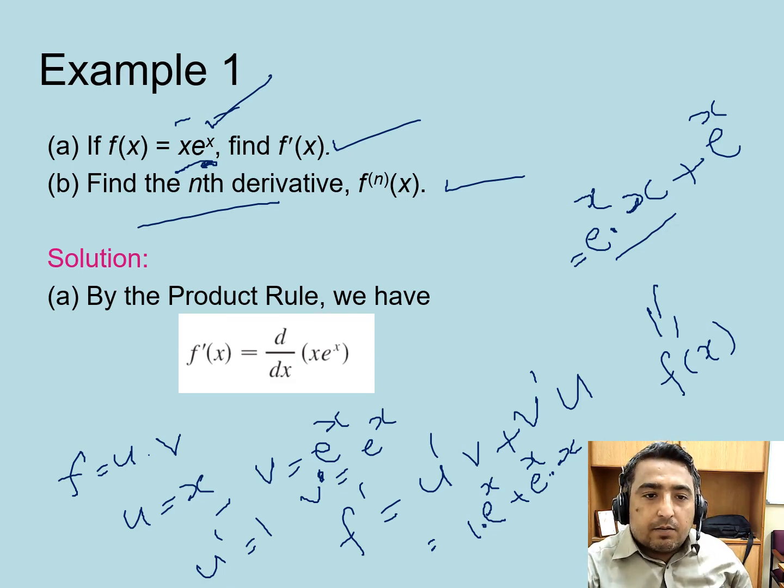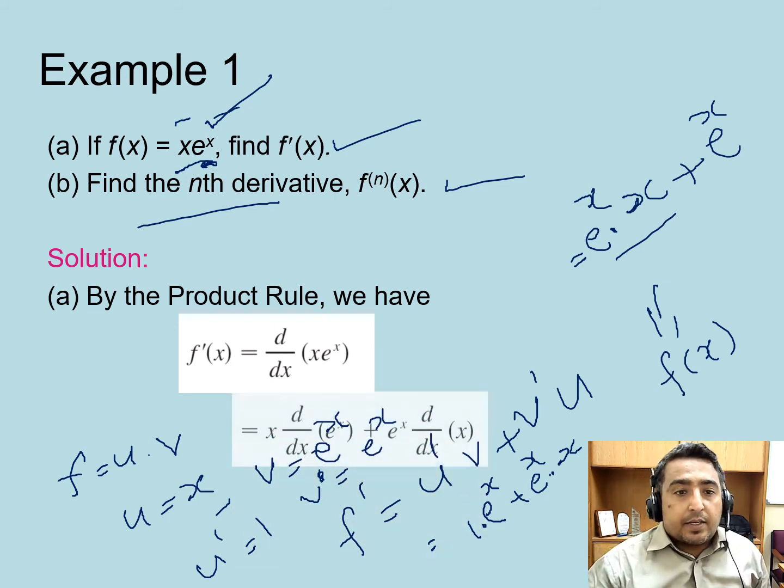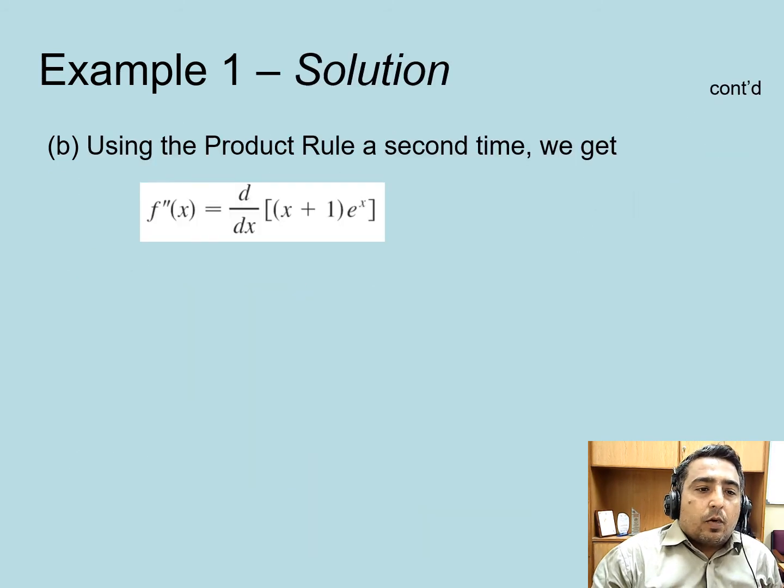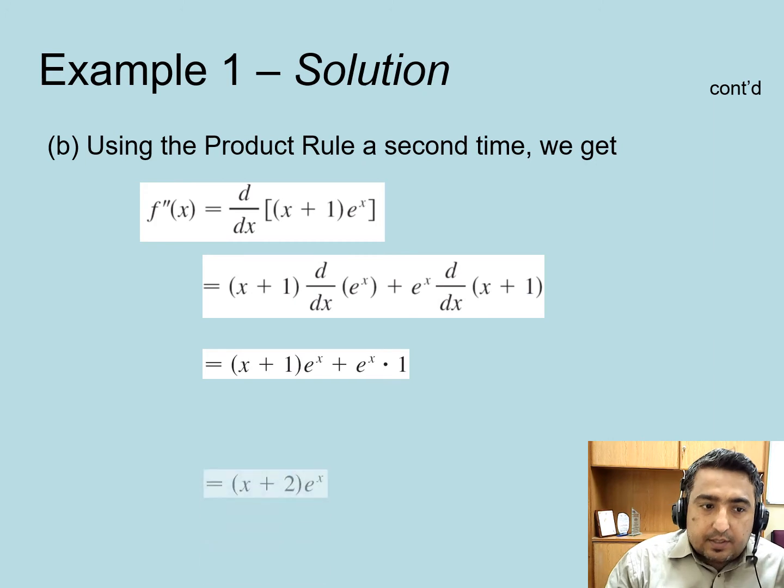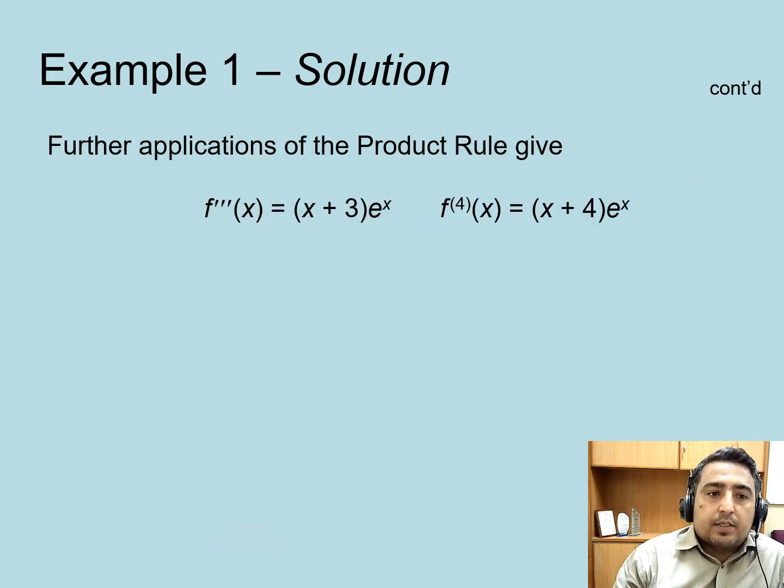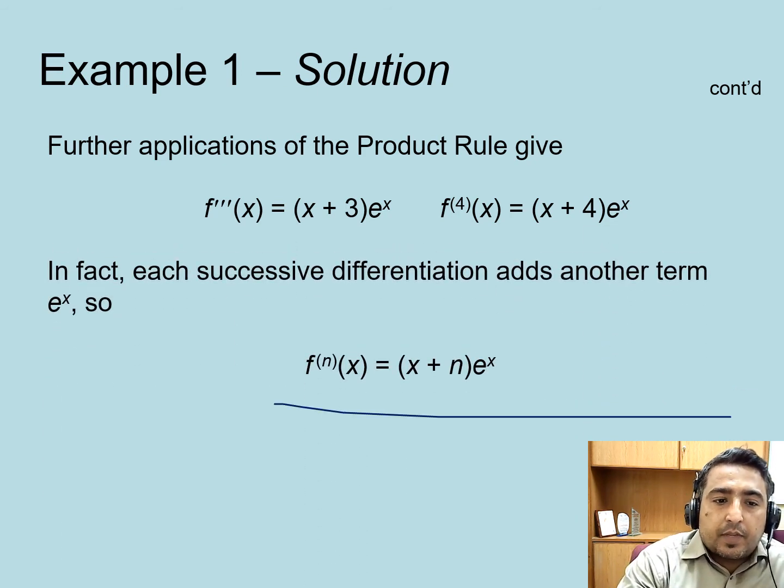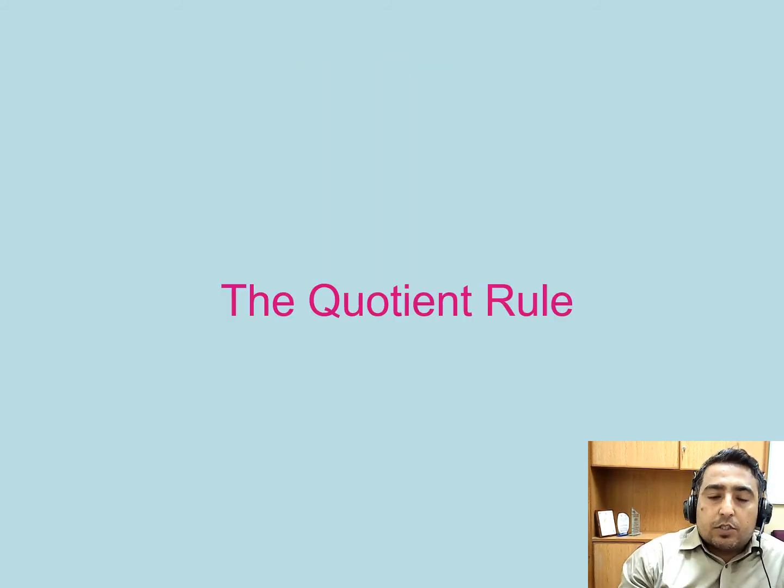If you find the second derivative, you will have this term again; third derivative, this term again; fourth derivative, this term again. This will be an unending sequence. Generalizing using induction, the nth derivative is (x + n)e^x. Just go through that example—it's a very good example that will help you understand.